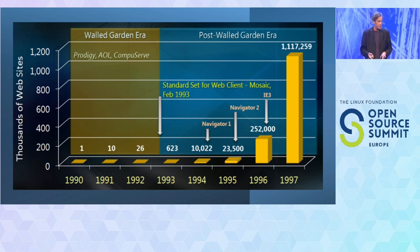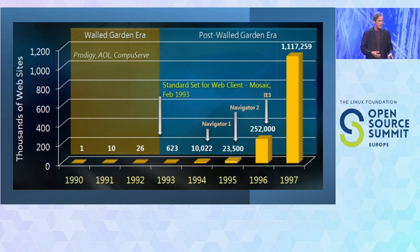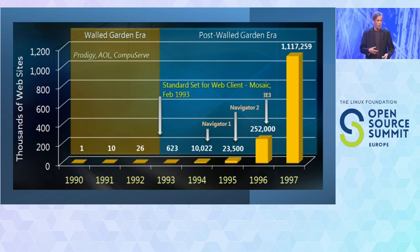The important thing is that when it went from the walled garden era to the post-walled garden era — the Google era, the search engine era — we went from something like America Online with curated content, to a more open, user-centric consumption of Internet content. That is very much the world that the open source community lives in. And this transition is precisely the transition that the broadcast television industry is going through over the next 10 years — a very dramatic impact.